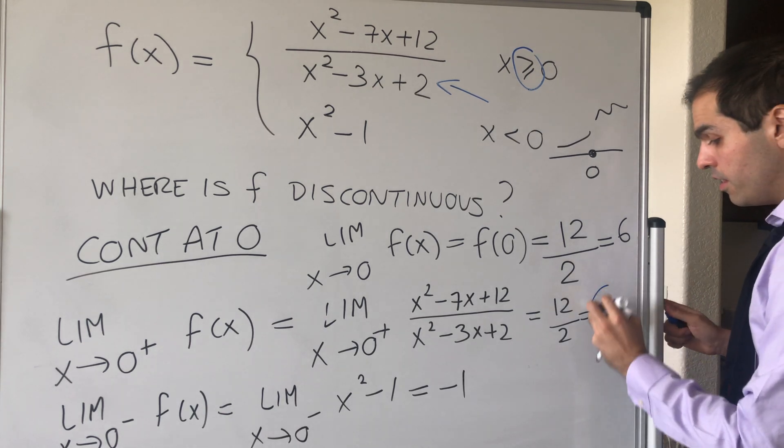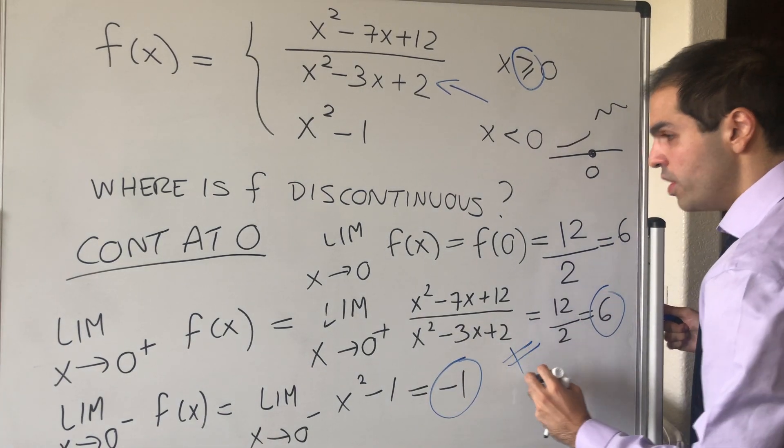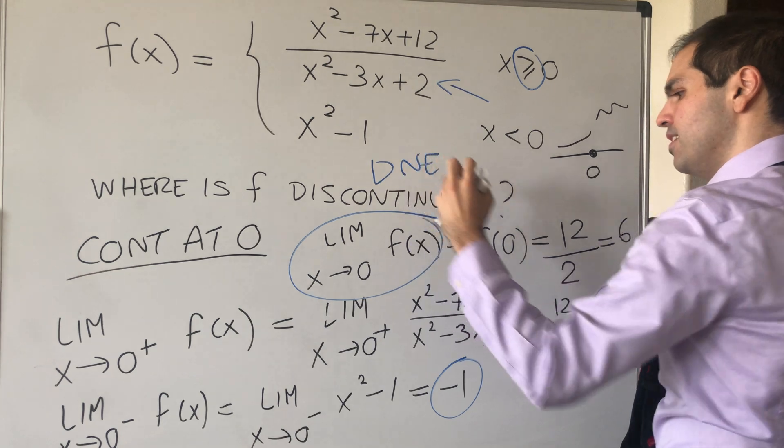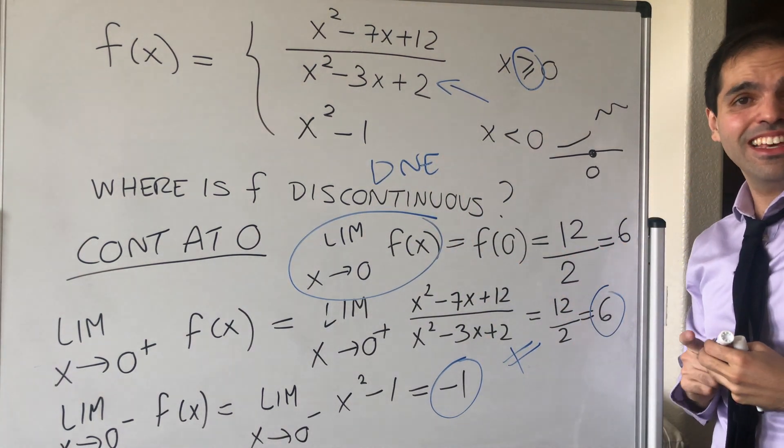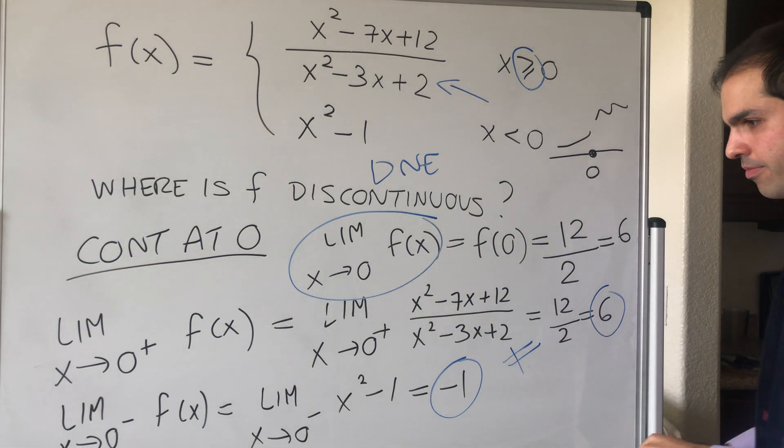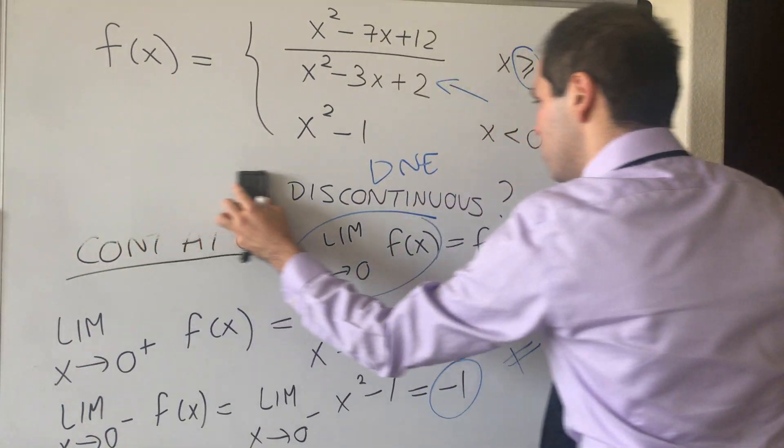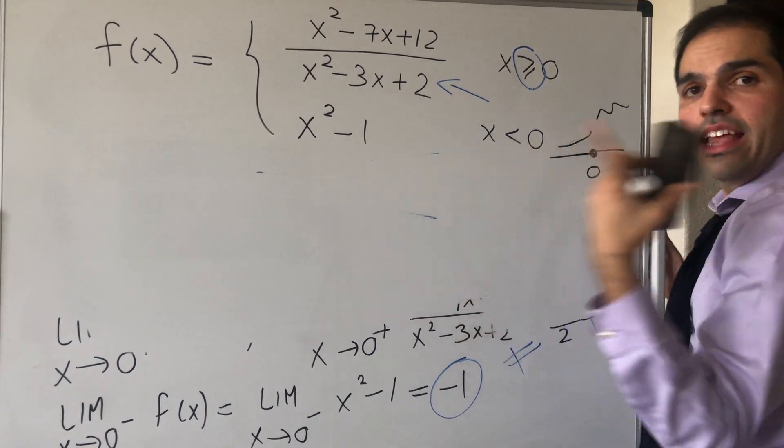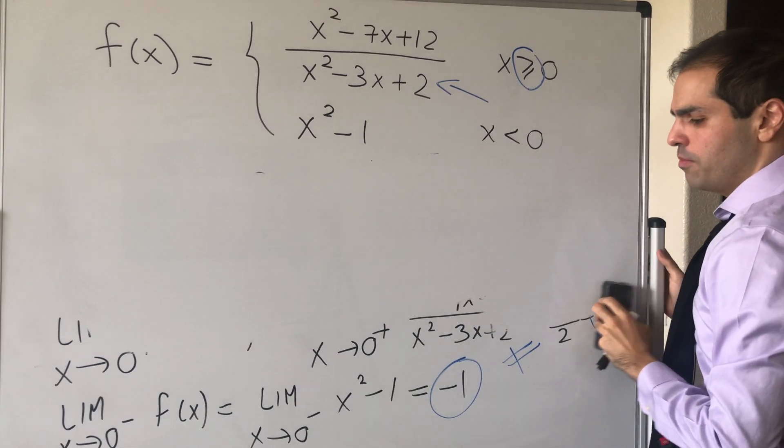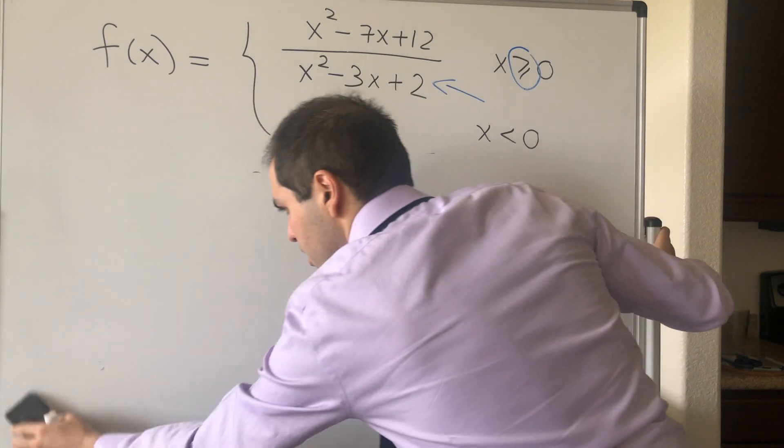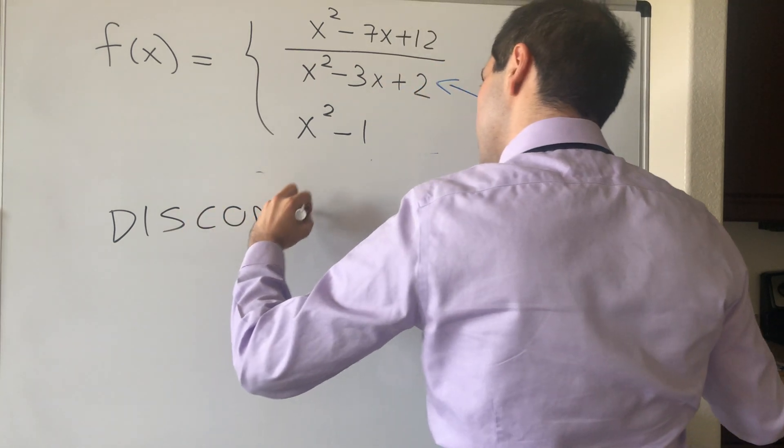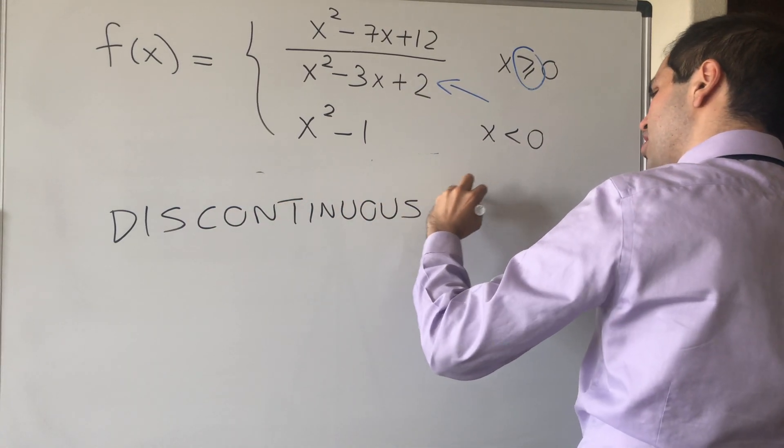So because the limits already don't agree, we can say that this limit actually doesn't exist. So in particular, it cannot be equal to 6, and that's why the function is discontinuous at 0 already. So remember, for continuity, the limit has to exist, and it has to be equal to f of that point.